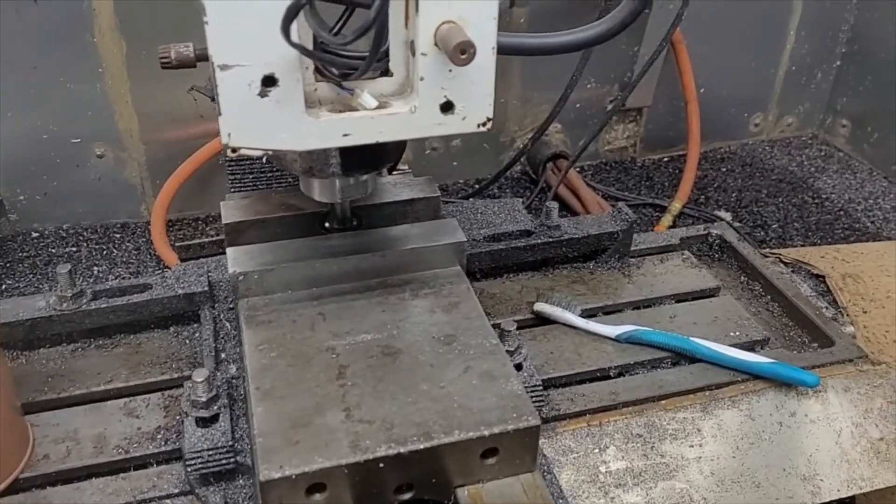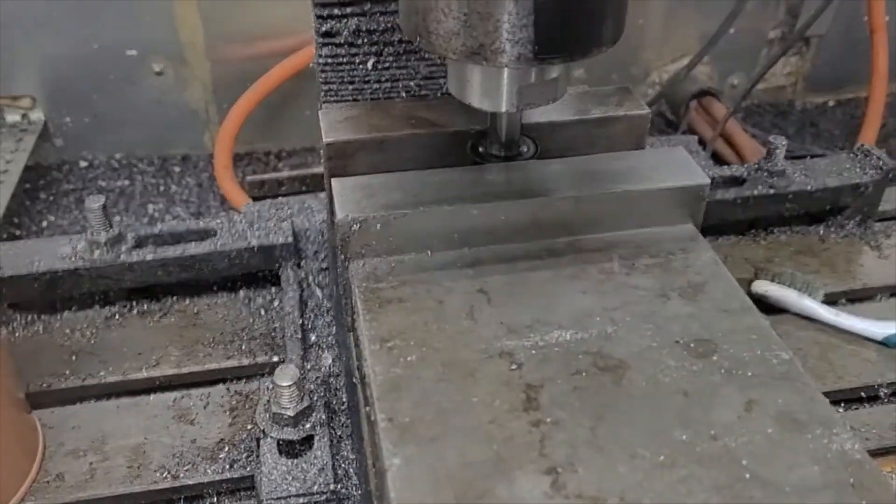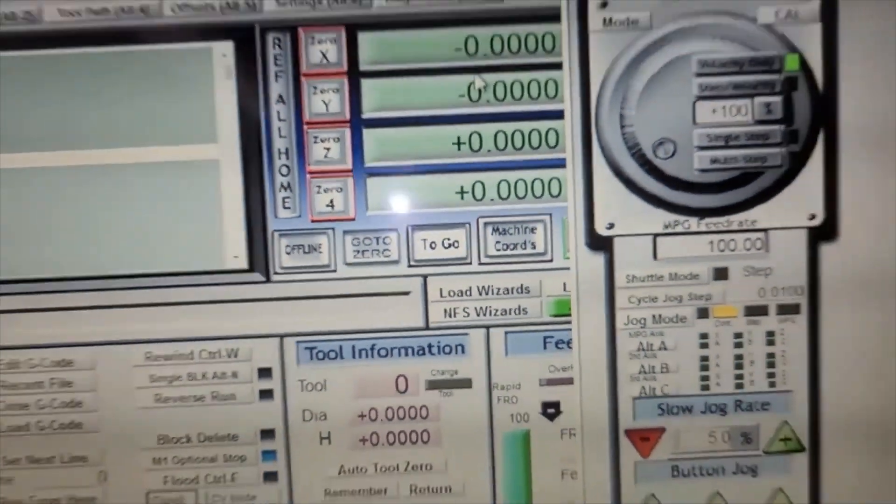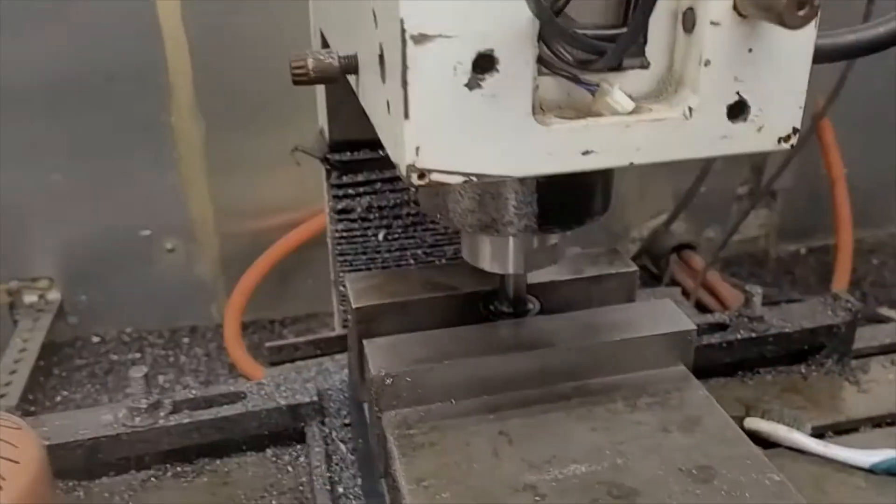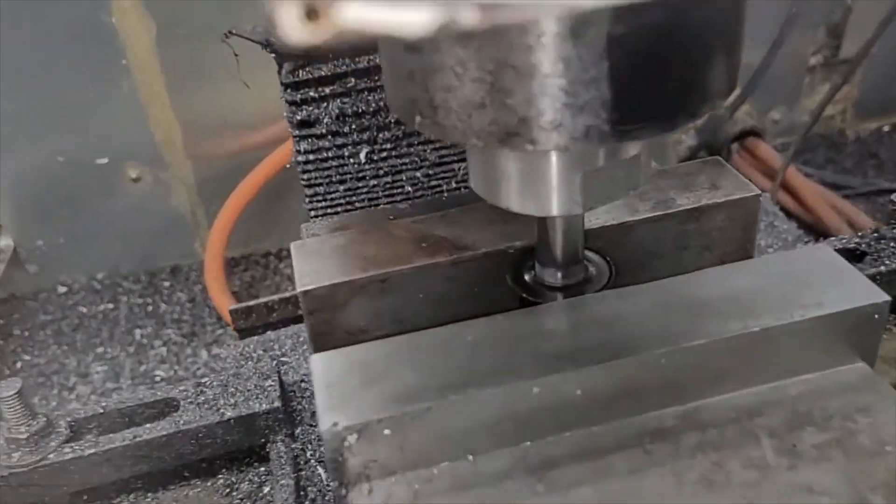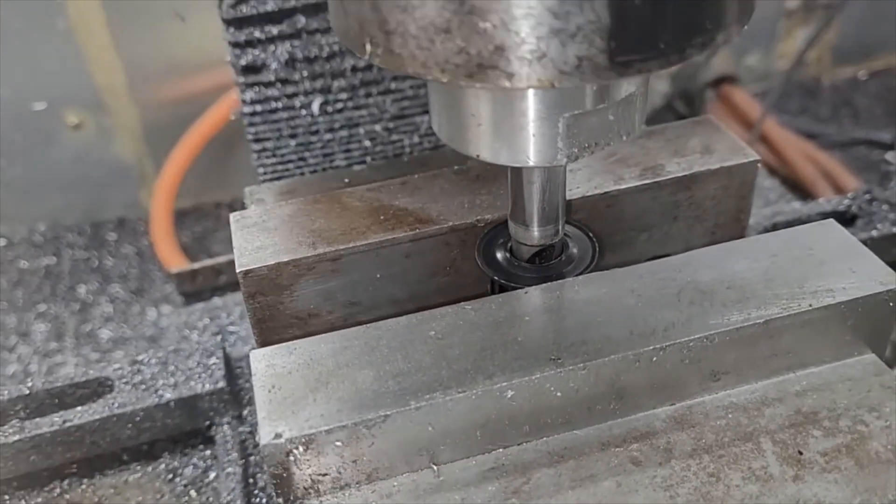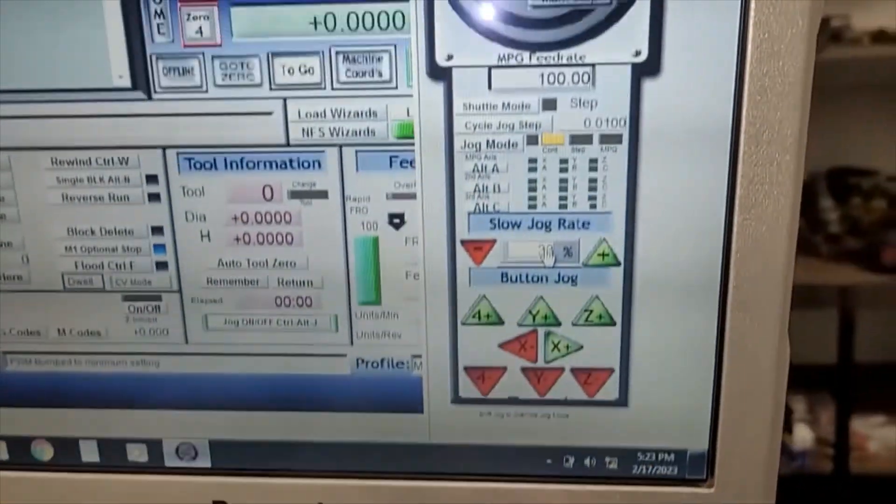Now what we're going to try to do is zero this. Now we should be able to just Z out of this part. Hopefully it stays in the vice. Okay, that's kind of slow, let's go a little faster, bump this up.